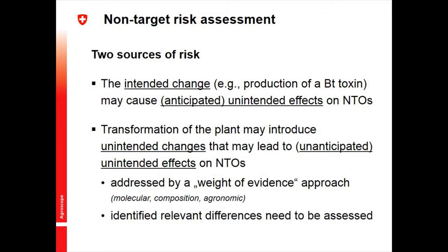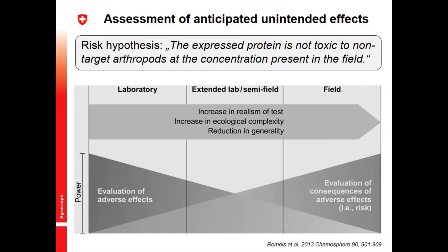Until today, unanticipated changes have never been identified as an issue. All risk assessments on BT crops have focused on the BT toxin risk source. For this potential risk source, it is relatively easy to formulate risk hypotheses. The typical hypothesis is that the expressed BT protein is not toxic to non-target arthropods present at the concentrations found in the field.